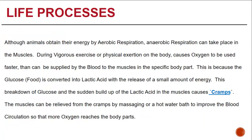Though animals obtain energy by aerobic respiration, anaerobic respiration can take place in the muscles. When we exercise, walk a lot, or run, our body tends to use up a lot of oxygen. This oxygen is supplied to various parts of our body through the blood vessels. When we are working on a specific muscle part, that muscle gets overworked because not enough oxygen is being supplied to it, and less energy is converted from glucose — instead turning into lactic acid.